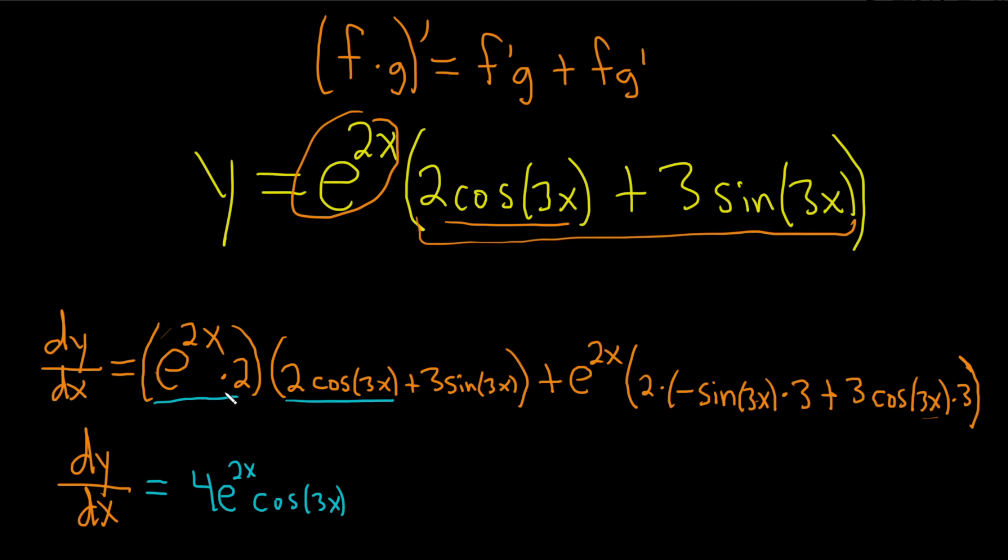This might be better. And then this times this is going to give us 6. Right? So 6 because 2 times 3 is 6. 6 e to the 2x sine 3x. Wow. Look how pretty that is.